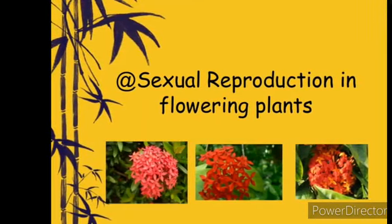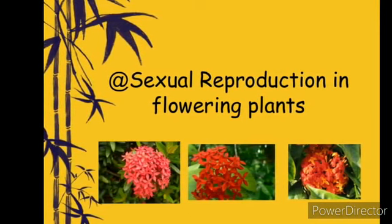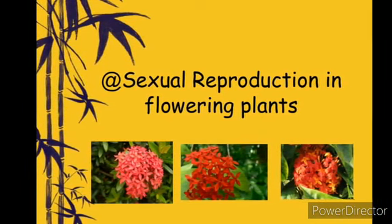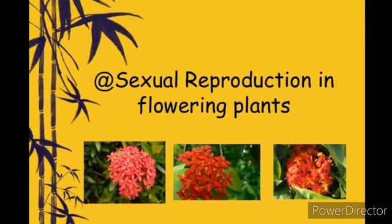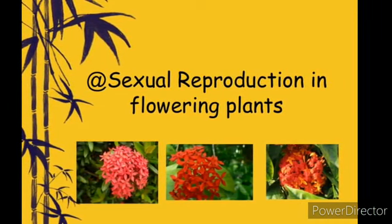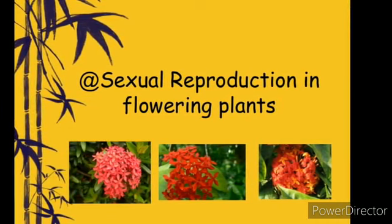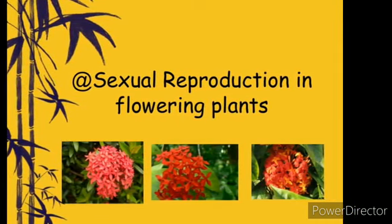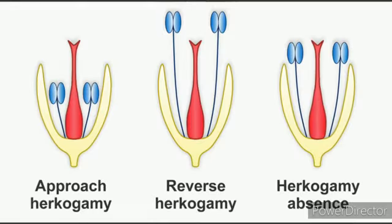Good morning children. In this video, we are going to see some of the terms related to sexual reproduction in flowering plants — chapter 7. Specifically, we will look at some of the strategies that a bisexual chasmogamy flower can evolve to prevent self-pollination.